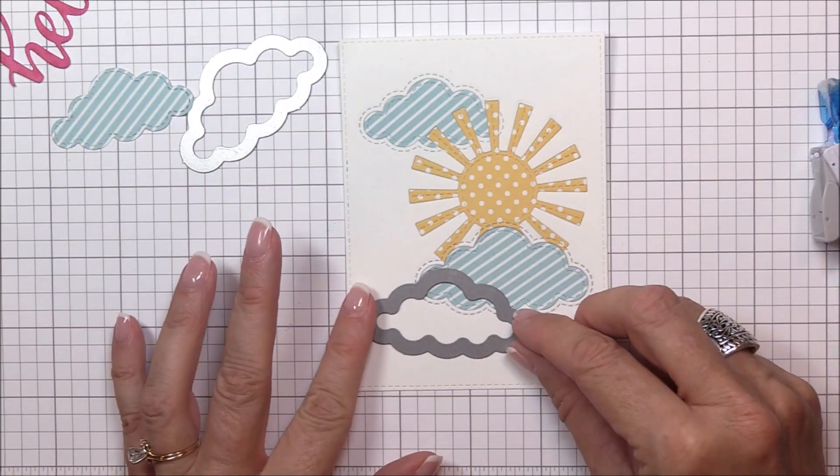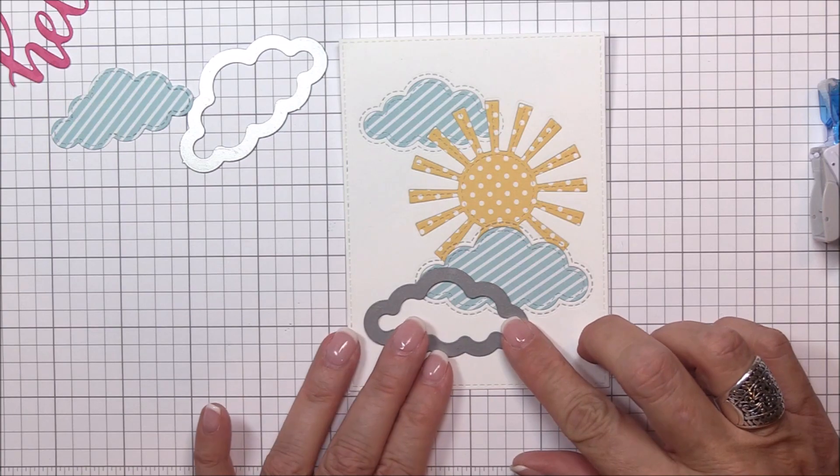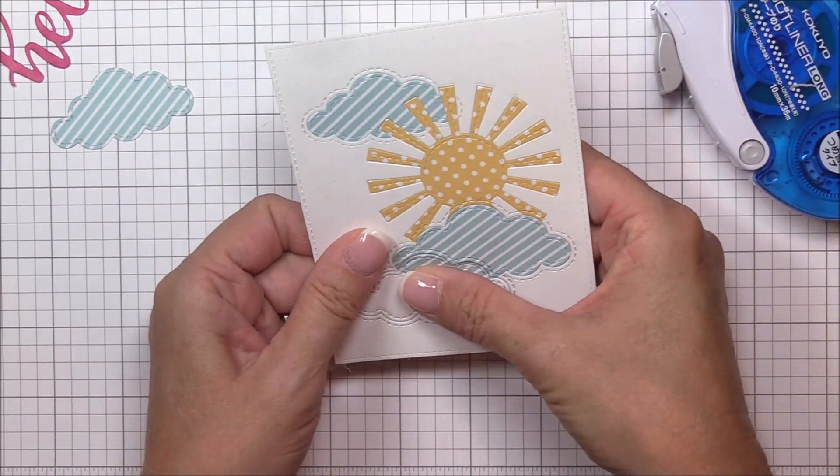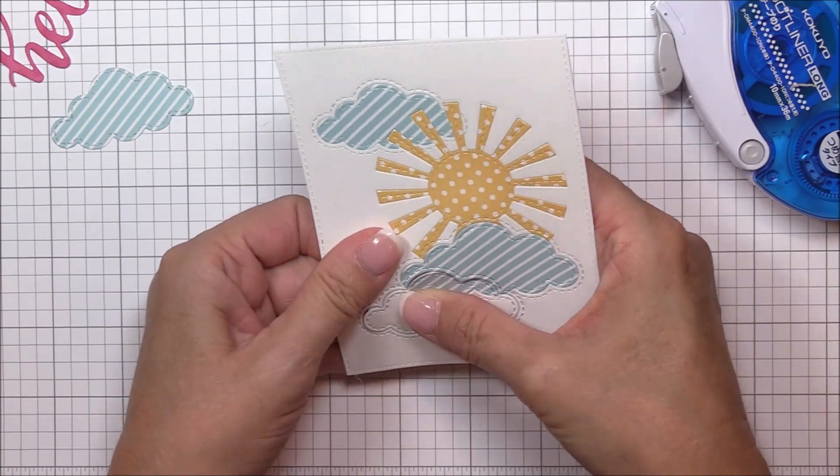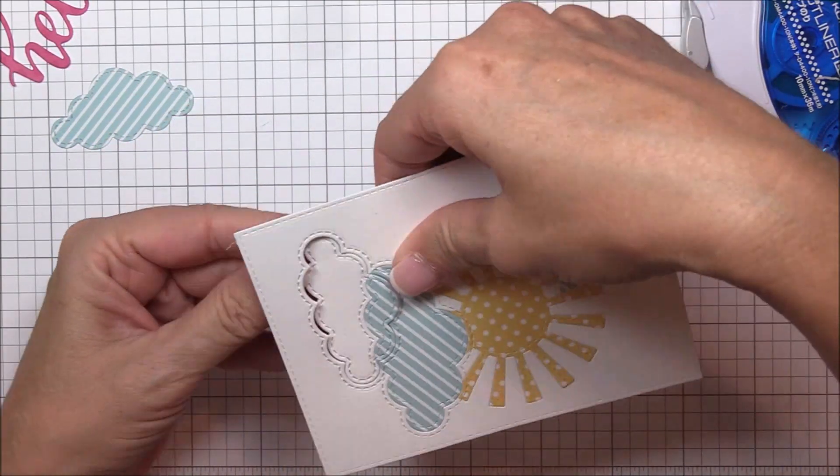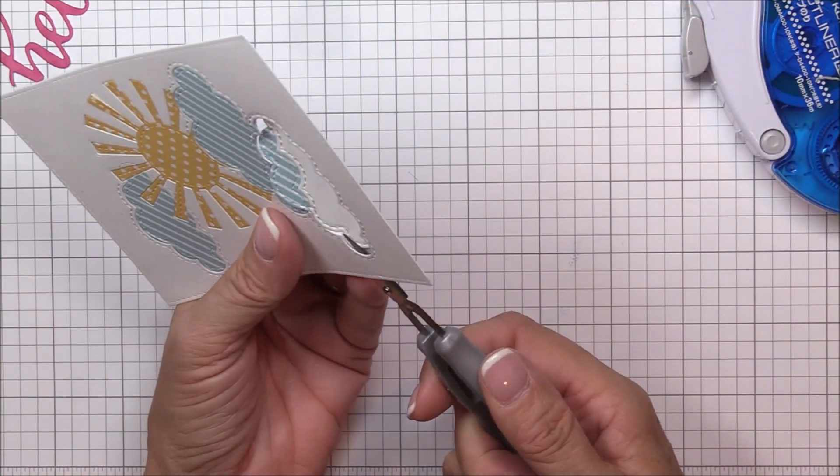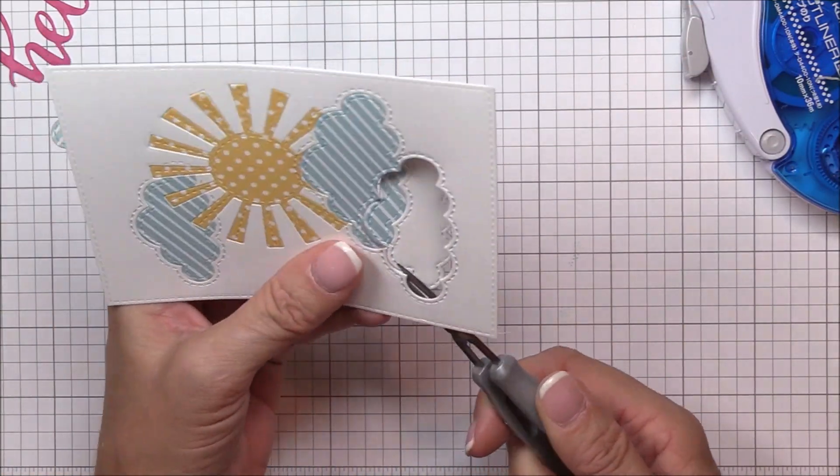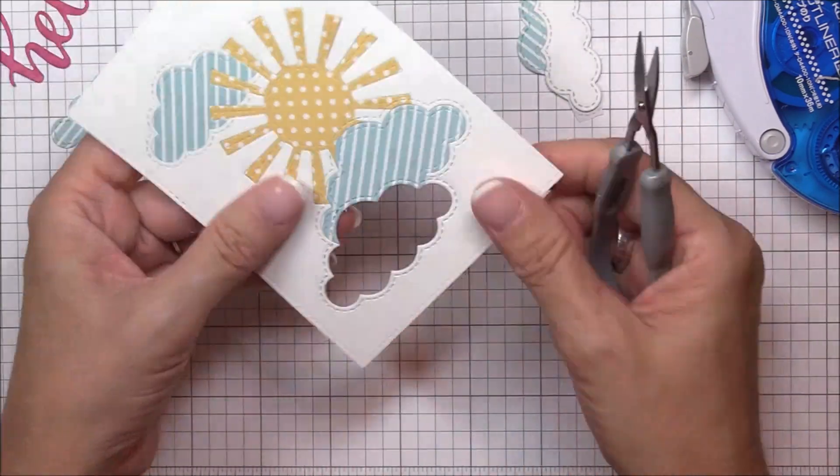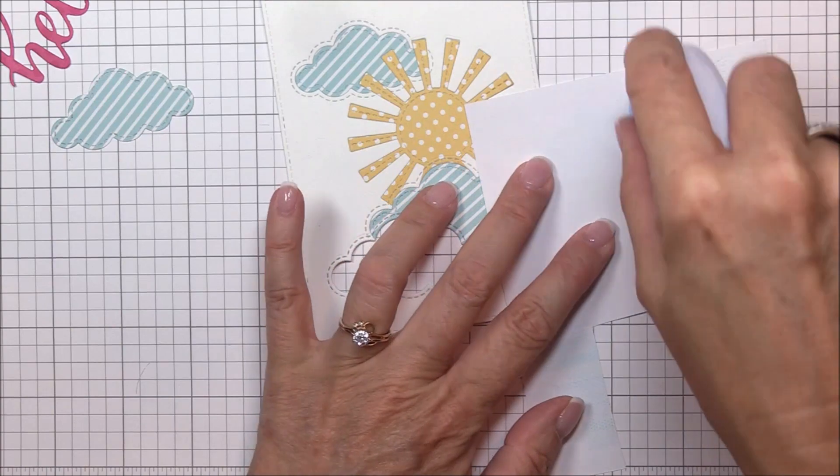Now that the second cloud is in place, I want to overlap the third cloud die with the second cloud. This will create a great grounding area for my sentiment, but you can see now why it's important to keep the bulk to a minimum on the back of your image panel. I'm now die cutting through several layers of paper. Honestly, there's not too much you can do about it unless you want to be super fastidious about not overlapping the printer paper on the back.